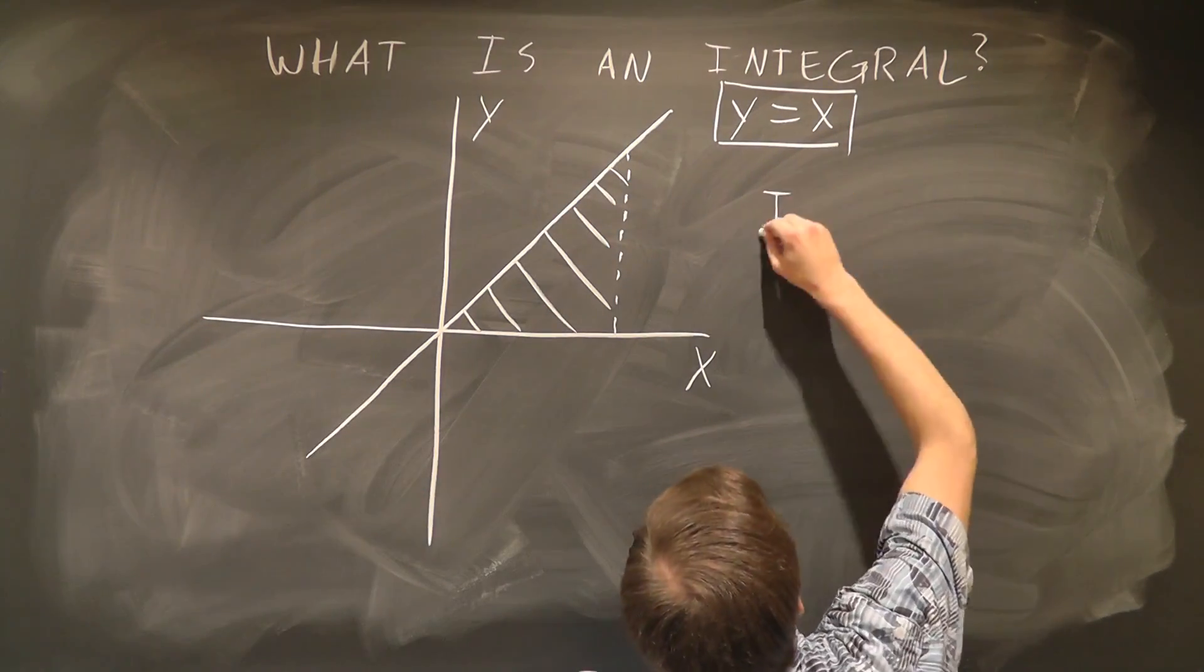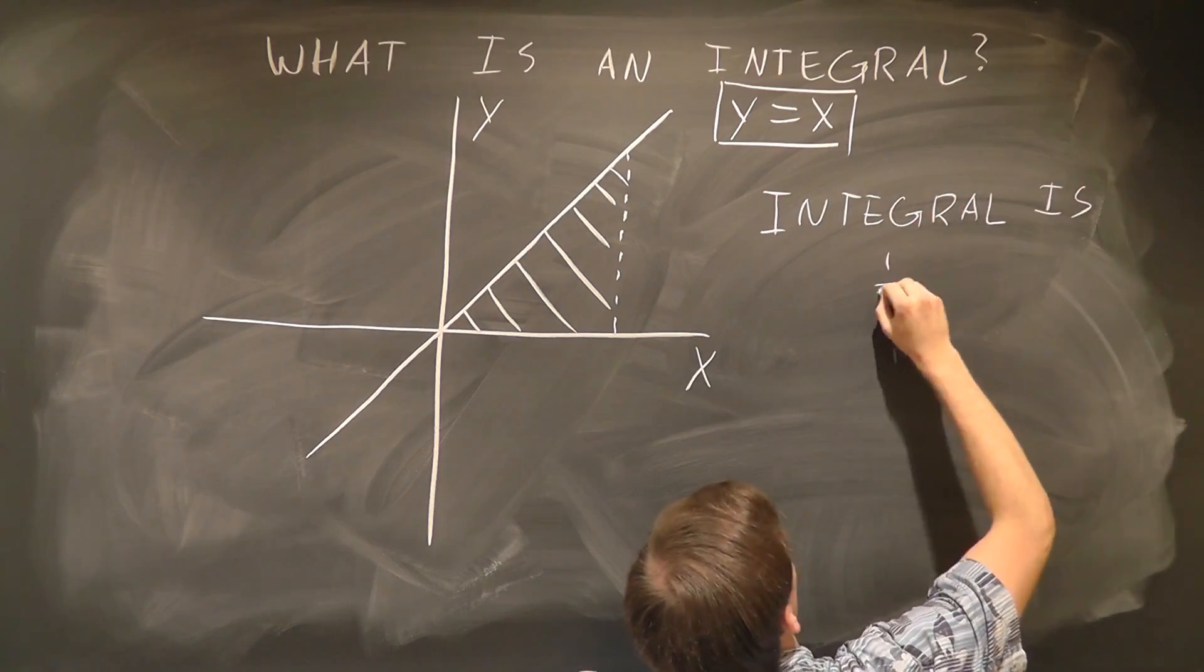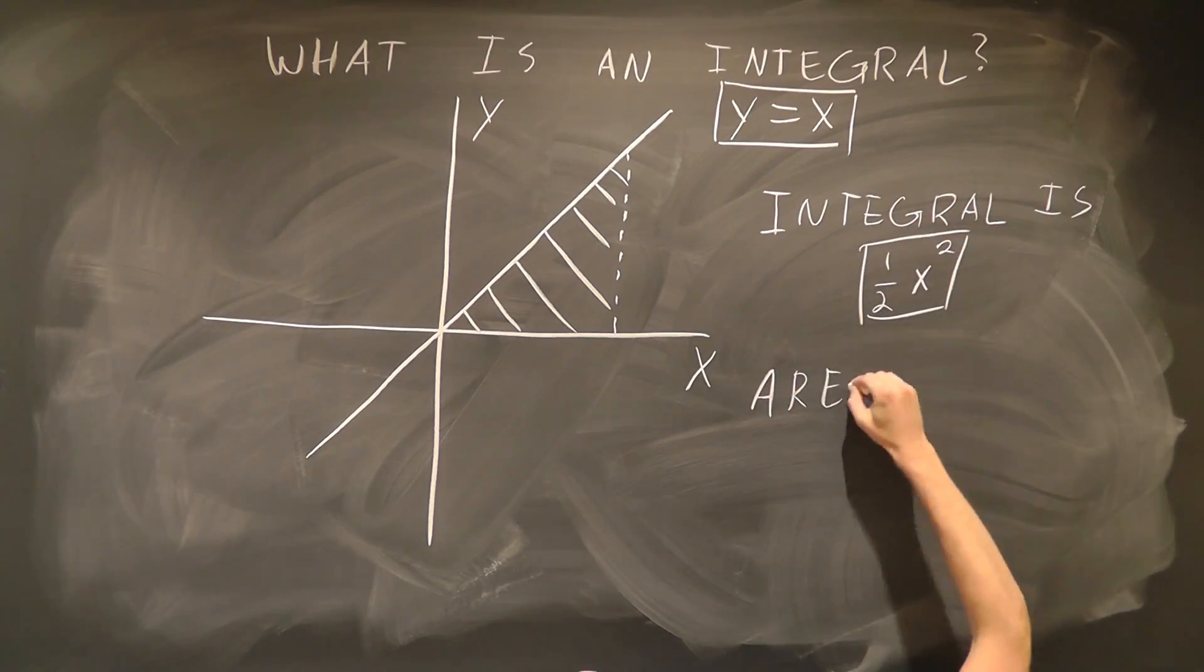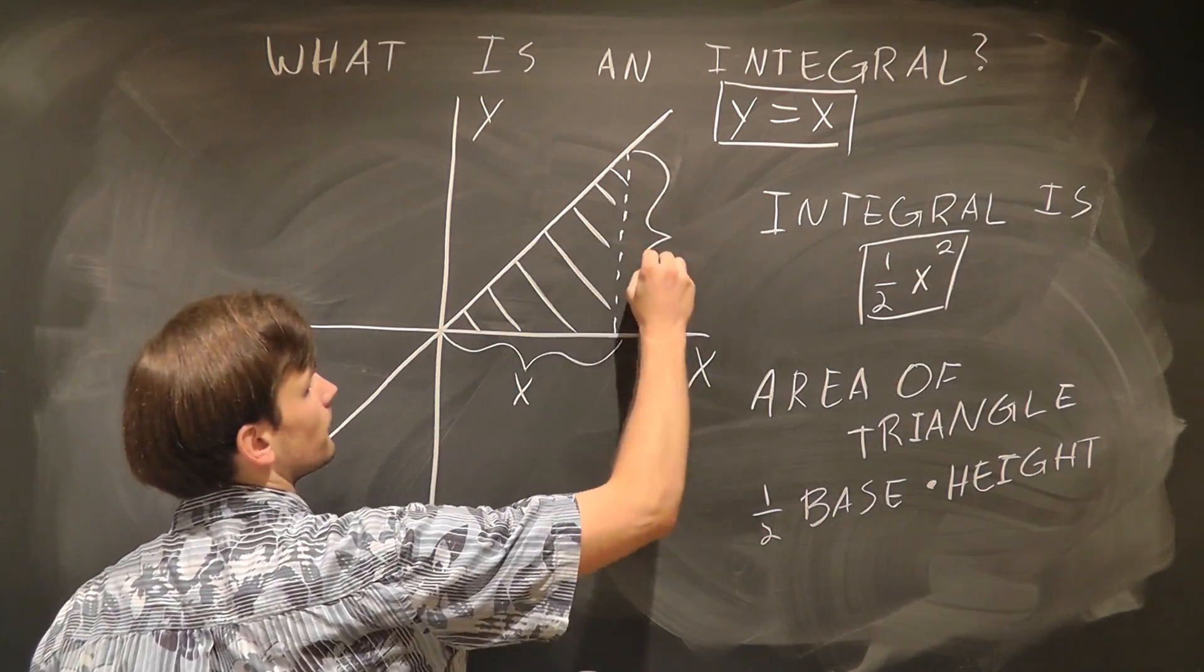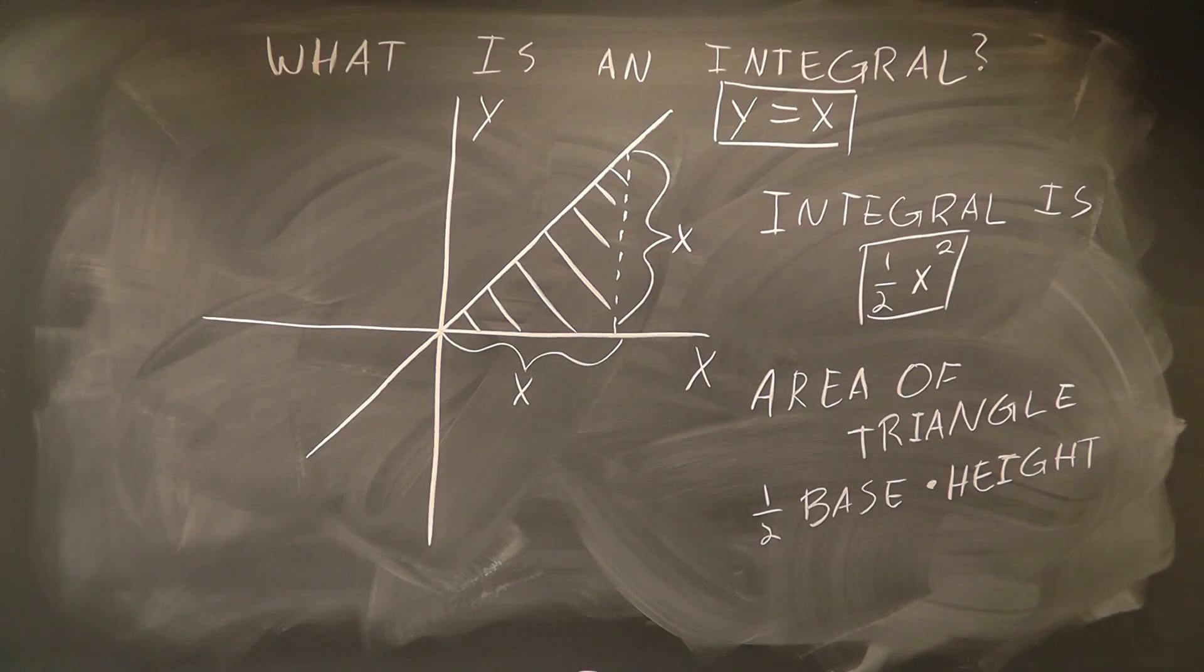We know from basic calculus that the integral of this equation is 1 half x squared, which looks suspiciously like the area of a triangle, as 1 half base times height. In fact, if the base is x and the height is also x, then the area of a triangle is exactly the same as the integral of this equation.